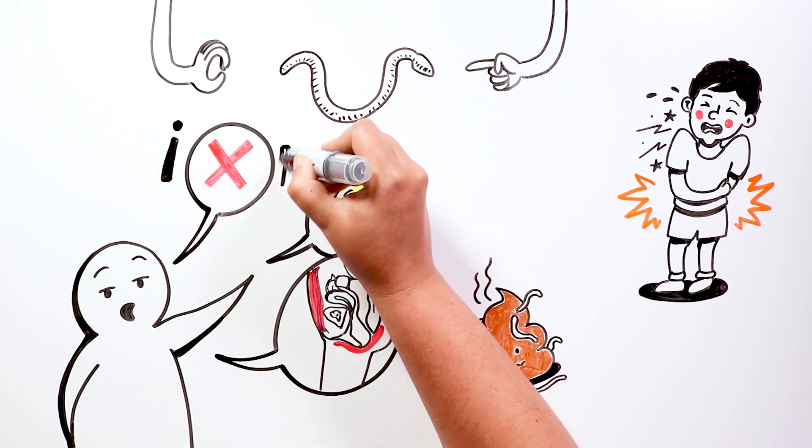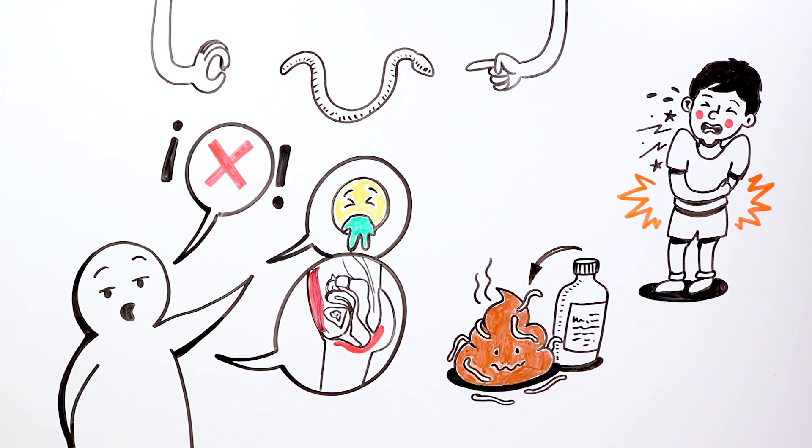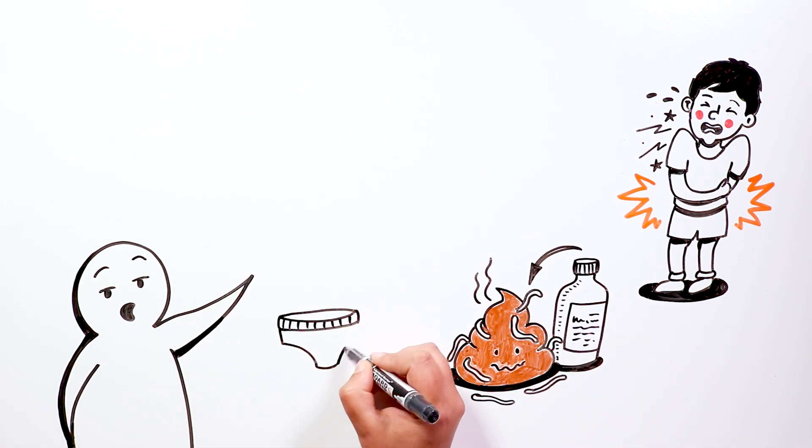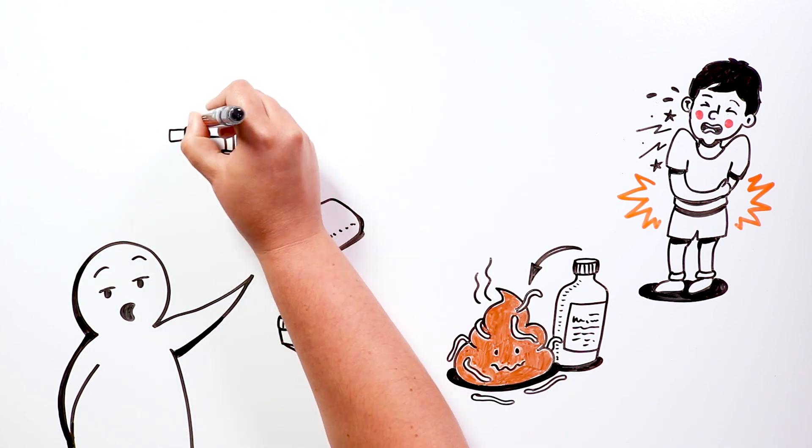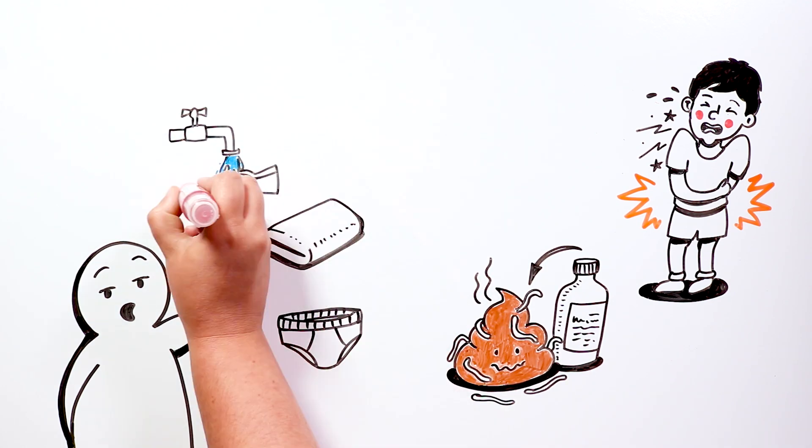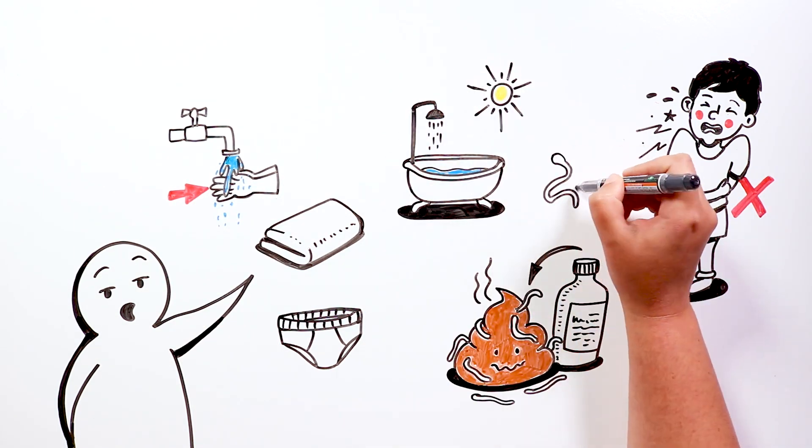The treatment is simple. The doctor will prescribe an anti-parasitic medication. In addition, it is advisable to change underwear, towels, and bedding frequently. Wash your hands a lot, insisting on the nail area. Don't scratch the area, and shower in the morning, as worms lay eggs at night.